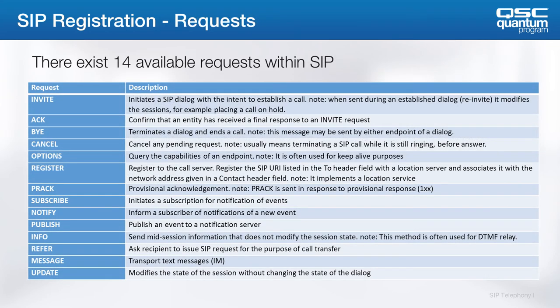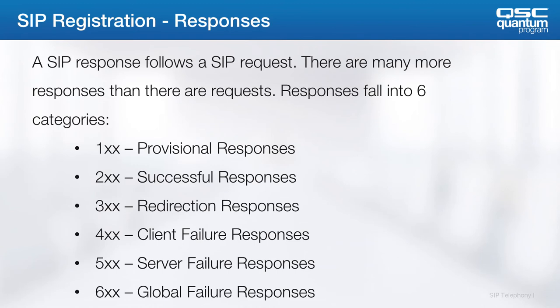Within SIP there are messages called requests and responses. You don't need to memorize all of these, but let's take a look at a couple of them. The INVITE is the message to start the call. The BYE message ends the call. If you need to end a call before a successful connection, then you get a CANCEL message. There are only 14 types of requests but far more types of responses. Responses can be categorized into various groups: provisional, successful, redirection, and a few types of failure responses.